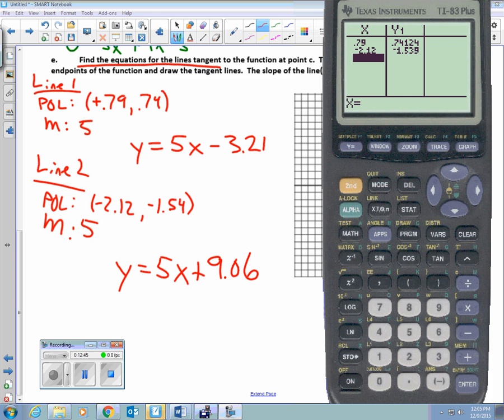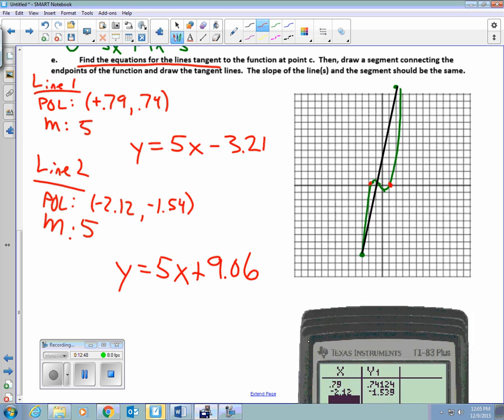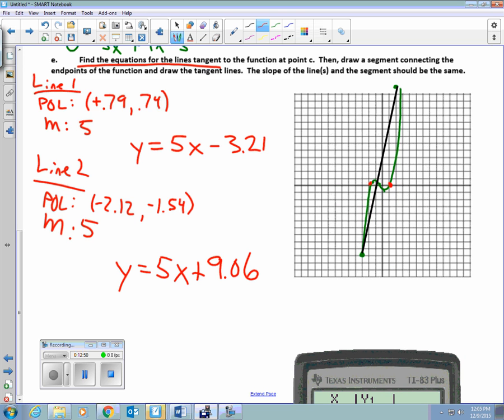So this is what we should get for our equations for our lines when we write them. And so what I'm going to do right now is I'm just going to graph them. And you're going to see that the lines should be parallel to the average rate of change. And so y equals 5x minus 3.21. I go down 3, and then I'm going to use my slope. I'm going to go up 5 and over 1.